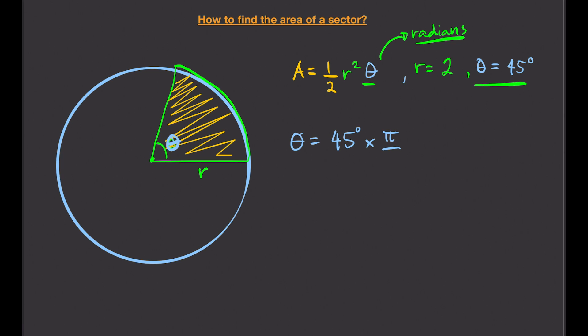To convert, we multiply by π over 180 degrees. 45 divided by 180 gives us 1/4, so θ equals π over 4. That's our angle in radians, and we can now compute the area by substituting the values.